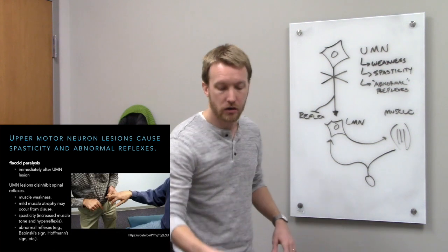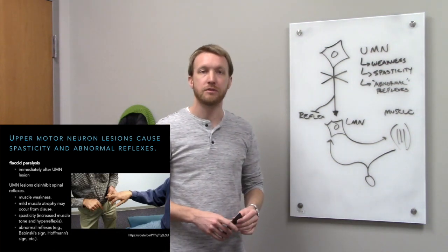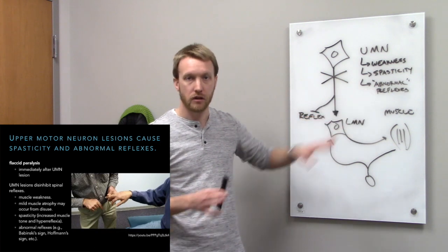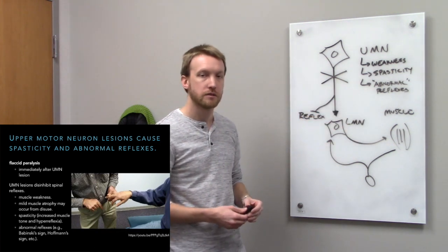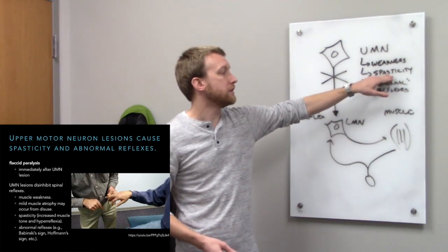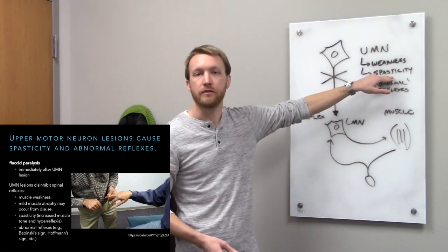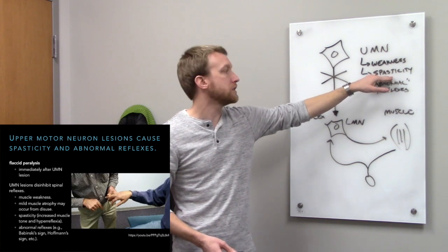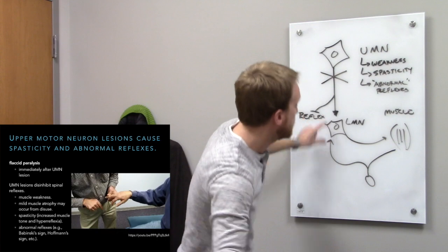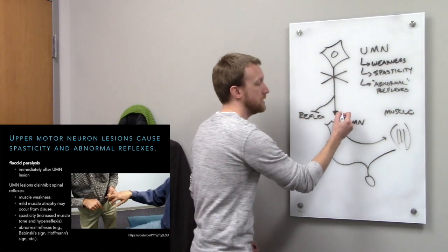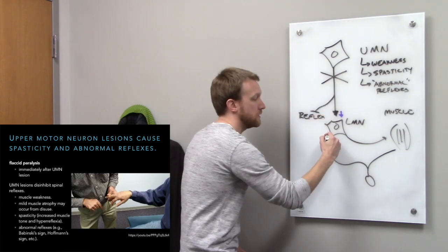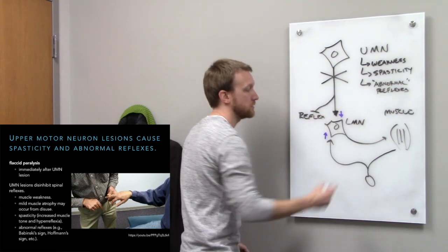The spasticity and increase in reflex amplitude seen with upper motor neuron lesions come down to homeostasis. Lower motor neurons want to stay alive. When the strength of synapses from upper motor neurons drops because those neurons are lost, the strength of synapses from sensory neurons is going to increase to compensate.